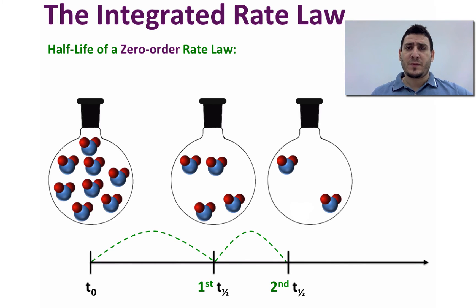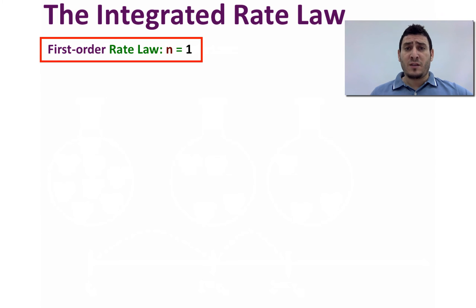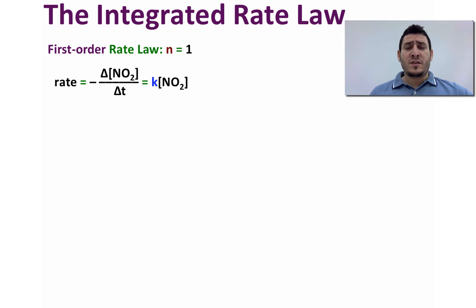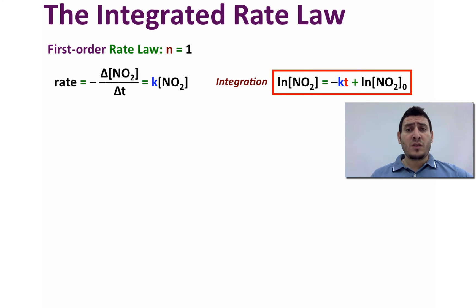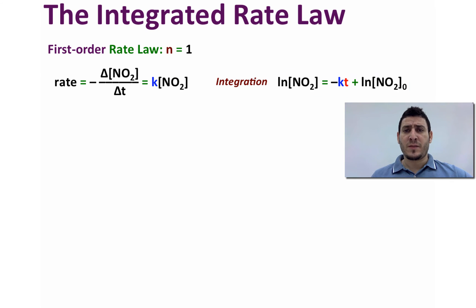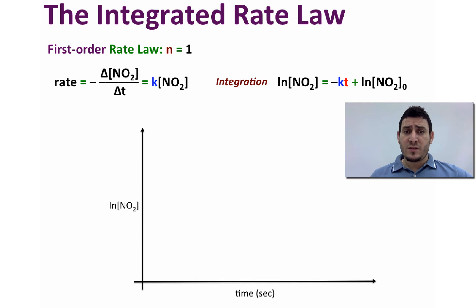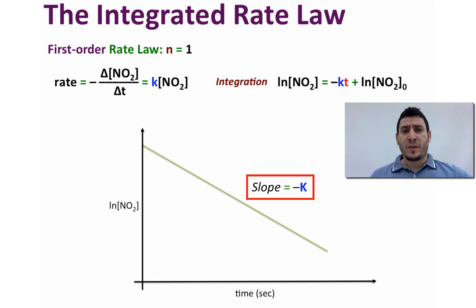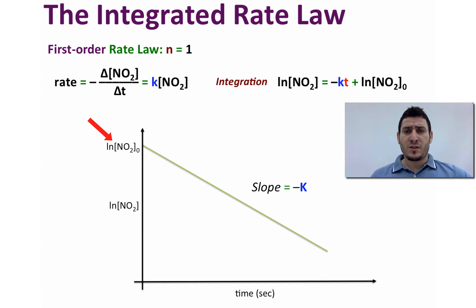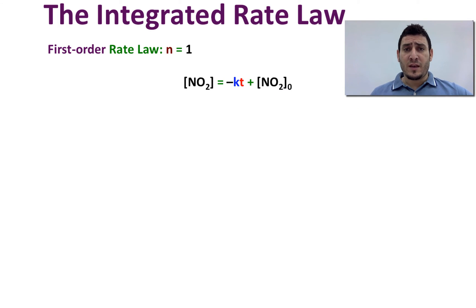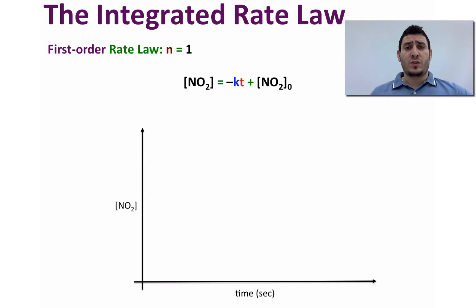Now let's discuss the first-order rate law where n = 1. The differential rate law is: rate = k × [NO₂]¹. Integration gives us: ln[NO₂] = −kt + ln[NO₂]₀. The plot of the natural log of concentration versus time gives a straight descending line with slope −k, and the y-intercept equals ln[NO₂]₀. Note that if we plot concentration versus time for a first-order reaction, we get a curve, not a straight line.